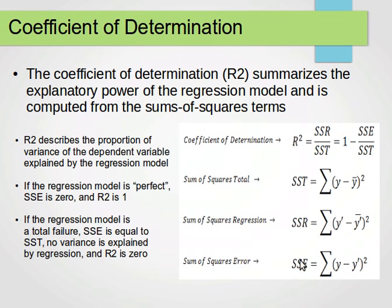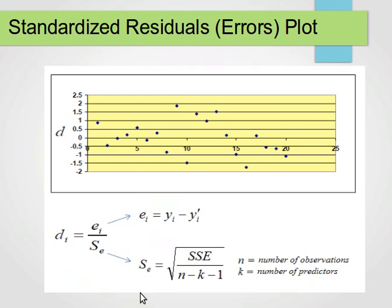SSE is the sum of squares error: we loop through all instances, subtract the predicted value from the actual value, square it, and sum. Then SE equals the square root of SSE over (n minus k minus 1), where n is the number of instances and k is the number of predictors — also called features, attributes, or descriptors — i.e., the number of columns apart from the class column. Thanks for watching; in my next tutorial series I'll start explaining the basic ideas behind many data mining algorithms.